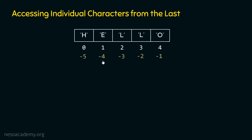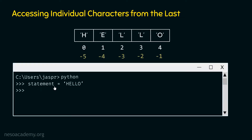With the help of these negative indices, we can also access characters from the last. Let's use the same variable statement assigned to hello. To access the last character of this string, we type: statement, opening square bracket, minus 1, then closing square bracket. In this way, we can access the last character of this string.